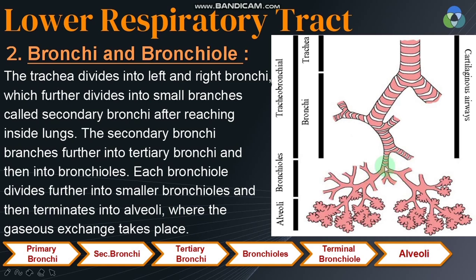In the bronchioles, there are soft tissues and no cartilaginous rings. The secondary bronchi divide into tertiary bronchi, and then into bronchioles. Each bronchiole further divides into smaller bronchioles and then terminates into alveoli — balloon-like structures resembling a bunch of grapes — which are the actual site of gaseous exchange.